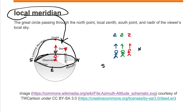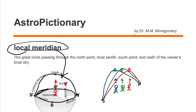There will be a line going from the north point through each person's zenith down through the south point. The green person will have a different meridian even though the north point and south point are the same. The same is true for the red person — they share the same north and south points, but each person has a different local zenith, and therefore each has a different local meridian.